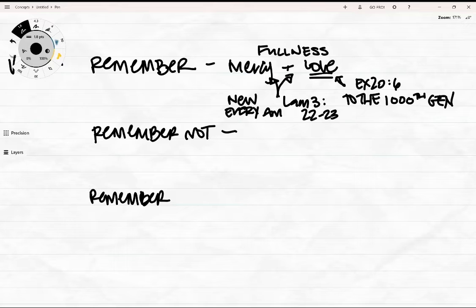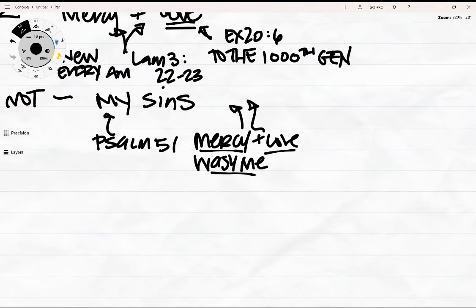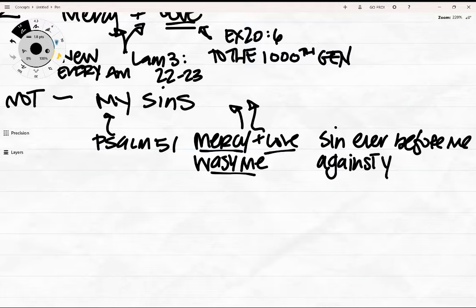So that was remember, and then remember not. David, who was writing the psalm, asked God not to remember the sins of his youth and his sins in whole. Psalms 51 puts it in perspective, another psalm of David, after he committed adultery and murder. Have mercy on me, God, according to your steadfast love, according to your abundant mercy. Blot out my transgressions, wash me thoroughly from my iniquity, and cleanse me from my sin. For I know my transgressions, and my sin is ever before me. Against you, and you only, have I sinned, and done what is evil in your sight.